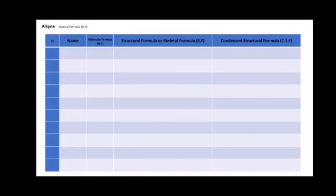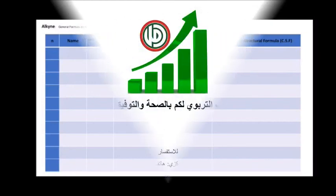And the second table is about alkynes for n equal to two till n equal to five only. Thank you, see you later.